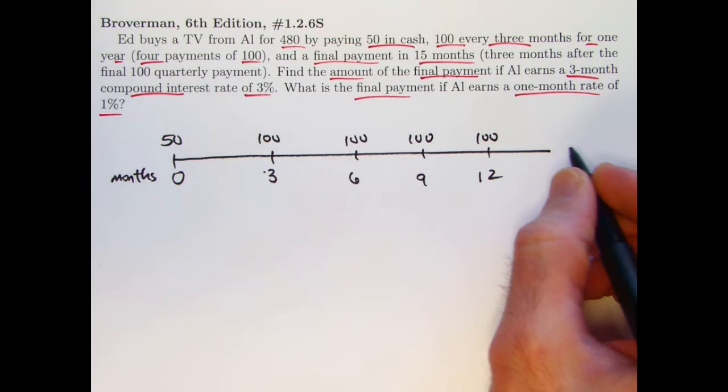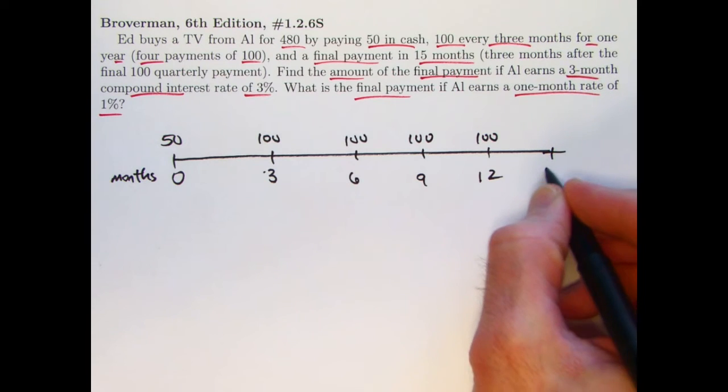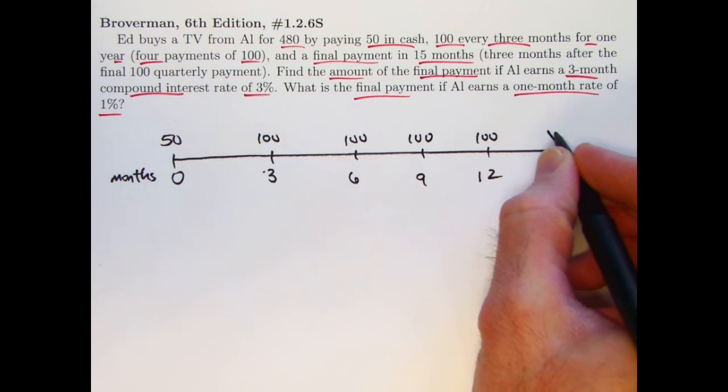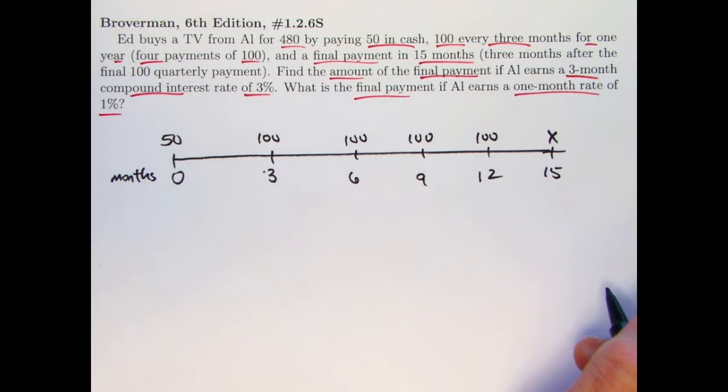And then Ed pays a final payment 15 months from now. That is unknown. Let's call that X. We want to solve for X.